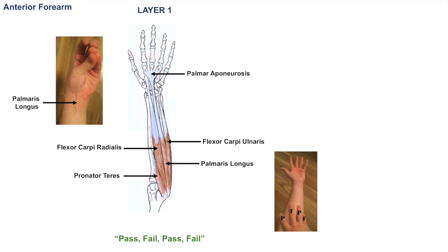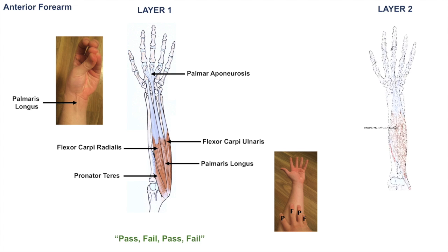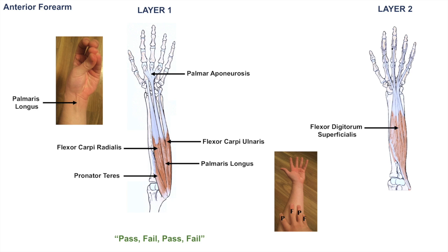If we were to remove this layer of muscle and move into layer two, we see that there's one larger muscle there, and that is the flexor digitorum superficialis. Think about "digitorum" — it leads to the digits in the hand — and "superficialis" because it is superficial, sitting in layer two.